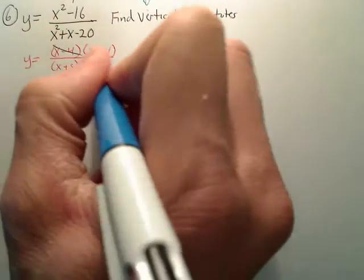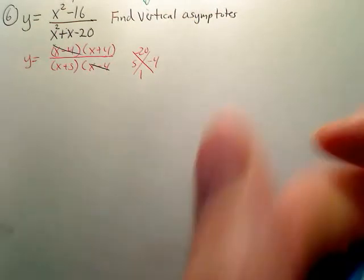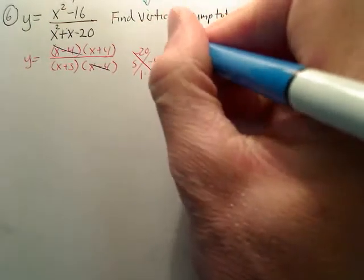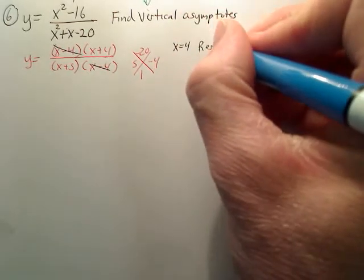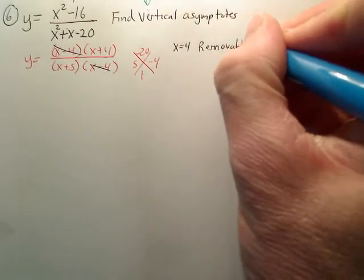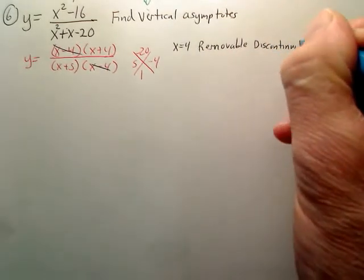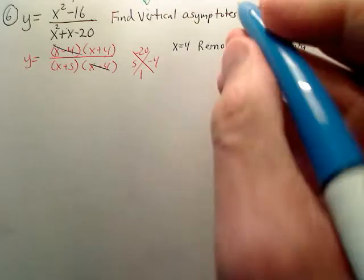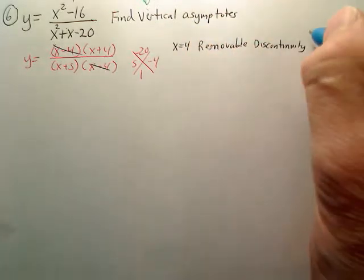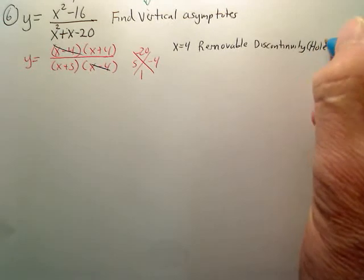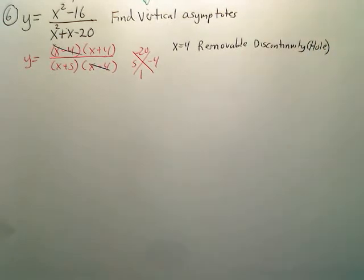So right off the bat, you'll notice x equals 4 is called a removable discontinuity. It's a removable discontinuity, meaning a hole in the graph.